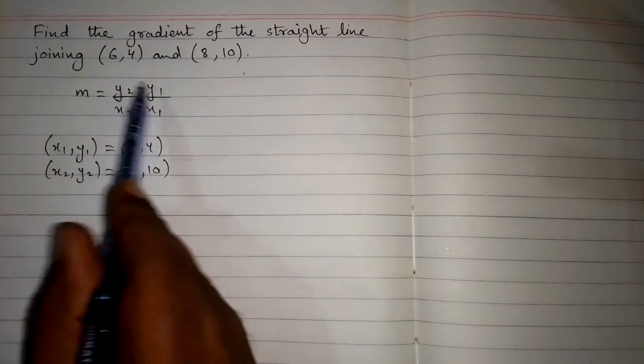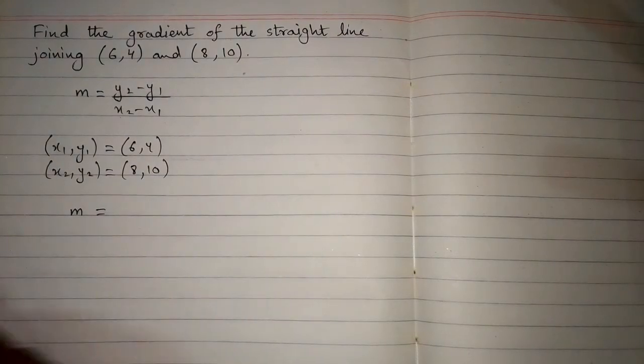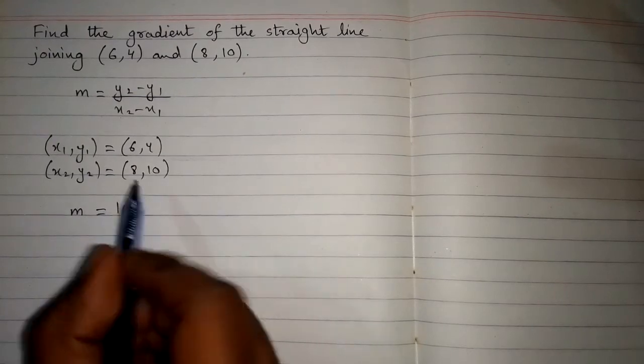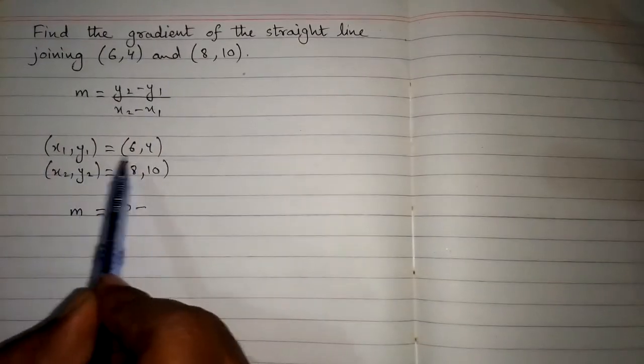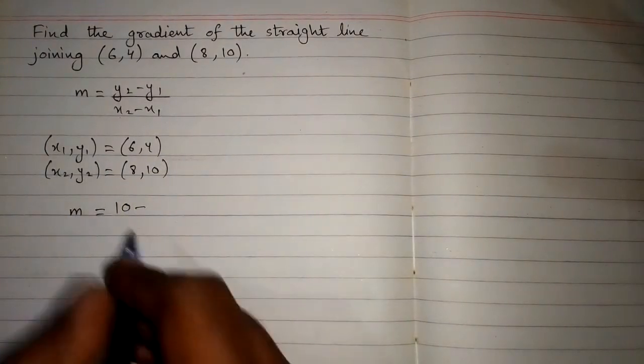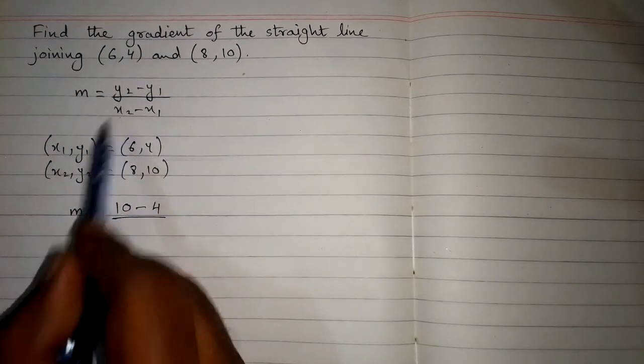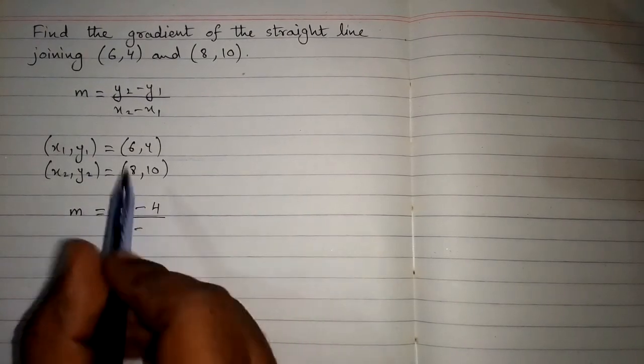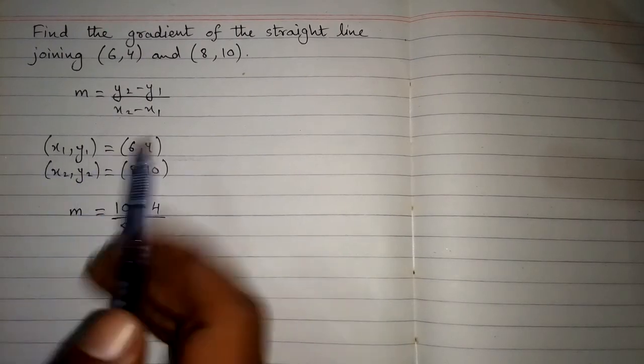So we will put all these values in this formula so that we will get the gradient of the line. In place of y2 we will put the value of y2 which is 10, then minus sign, and in place of y1 we will put the value of y1 which is 4. And then the value of x2, the value of x2 is 8, then minus sign, and then the value of x1 which is 6.